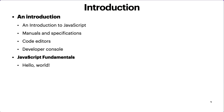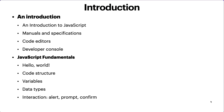Then we'll start with JavaScript fundamentals — writing our first Hello World program, talking about code structure, variables, data types, and interactions like alert, prompt, and confirm. If you have prior knowledge of other programming languages like C++ or Java, topics like variables and data types will sound familiar, since all languages share similar concepts but with different syntax. We'll also cover type conversions and basic operators.